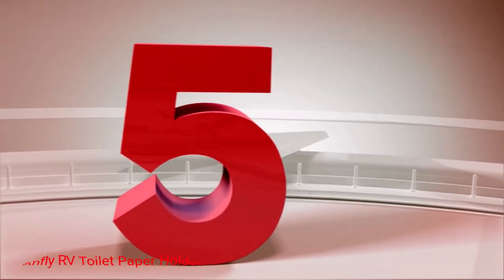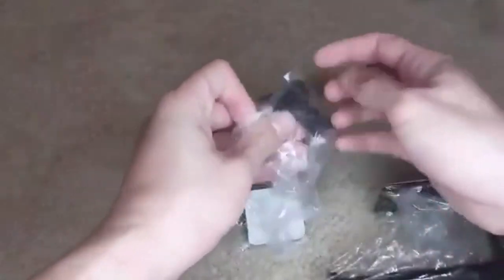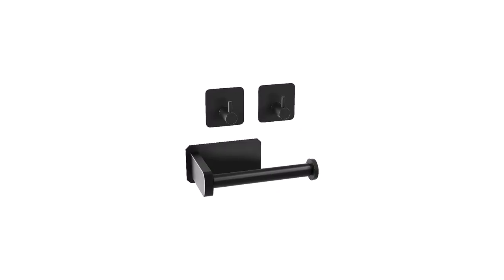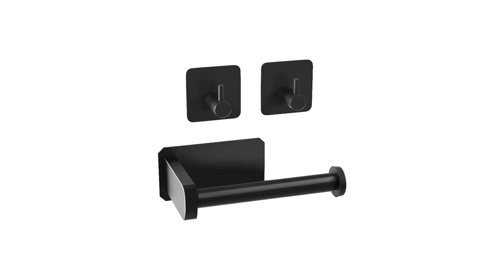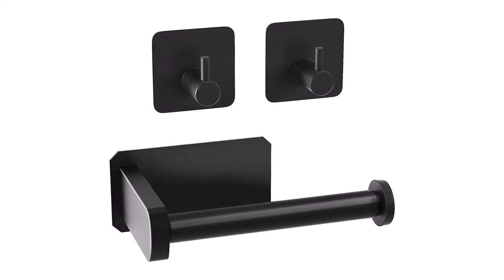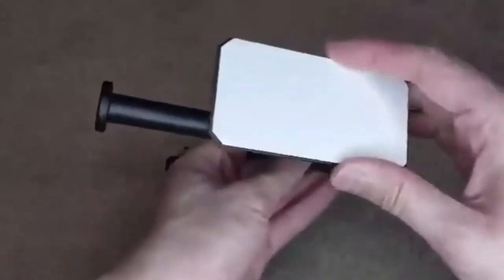Number 5. Anfli RV Toilet Paper Holder. I got attracted to try Anfli because it includes two bonus hooks to keep my other accessories organized. The TP holder itself fits large rolls, so I'm pretty sold on this set. I also love the black color because it matches well with my dark bathroom walls and accessories.